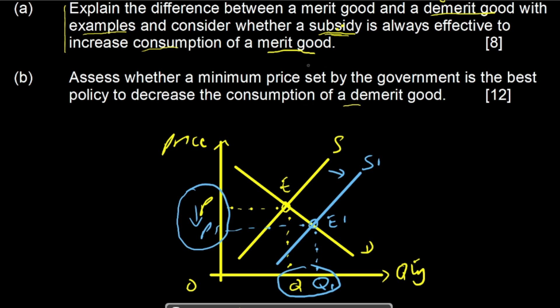For evaluation, conclude that a subsidy is not always effective to increase the consumption of merit goods, because in many cases the private sector may not pass on the benefit of the subsidy to the ultimate consumers. They may become inefficient and unproductive, and might not use better techniques of production to increase supply. As a result, prices may not decrease and quantity demanded may not increase — so consumption of merit goods may not actually rise.